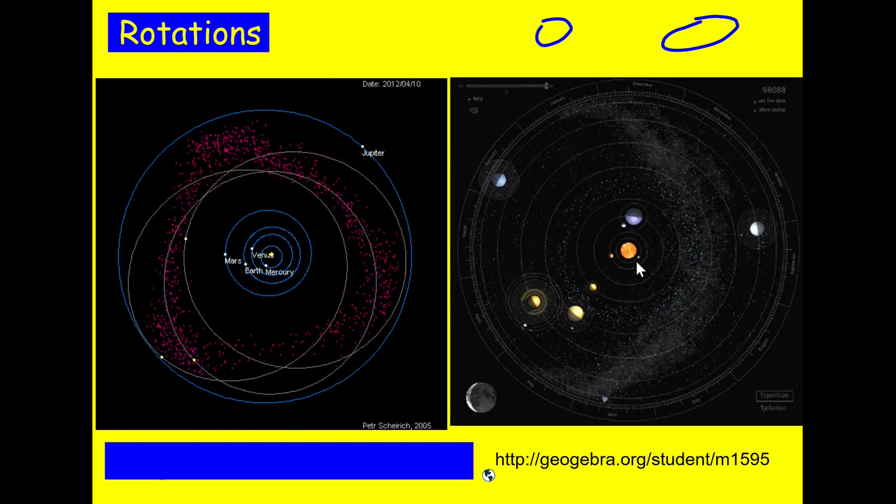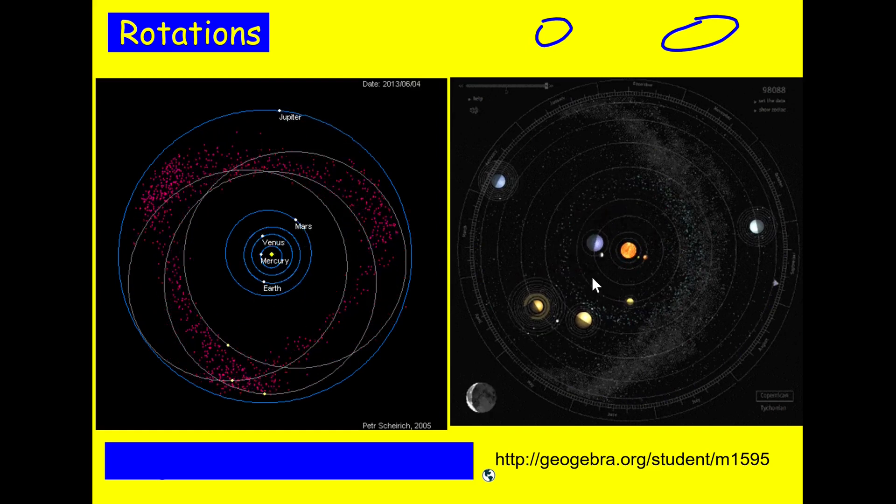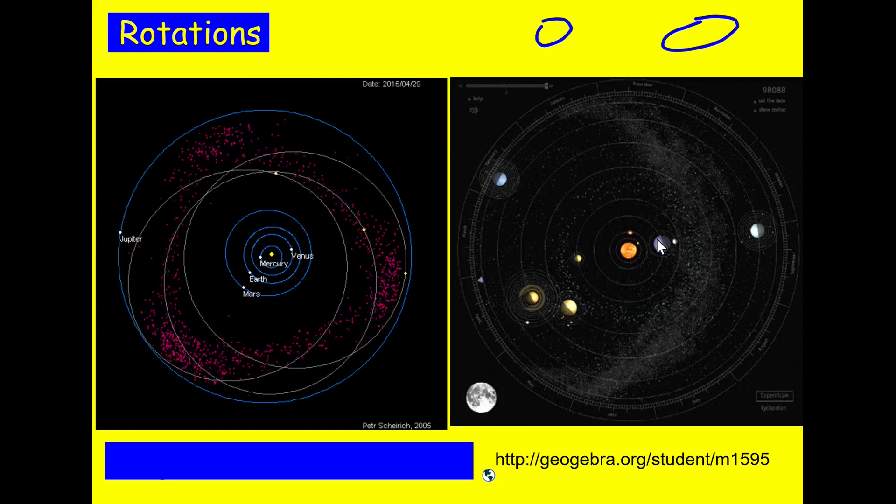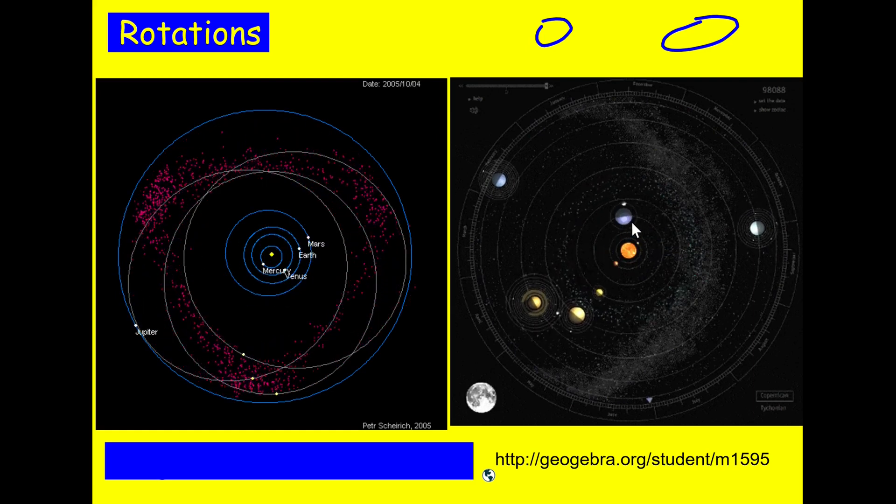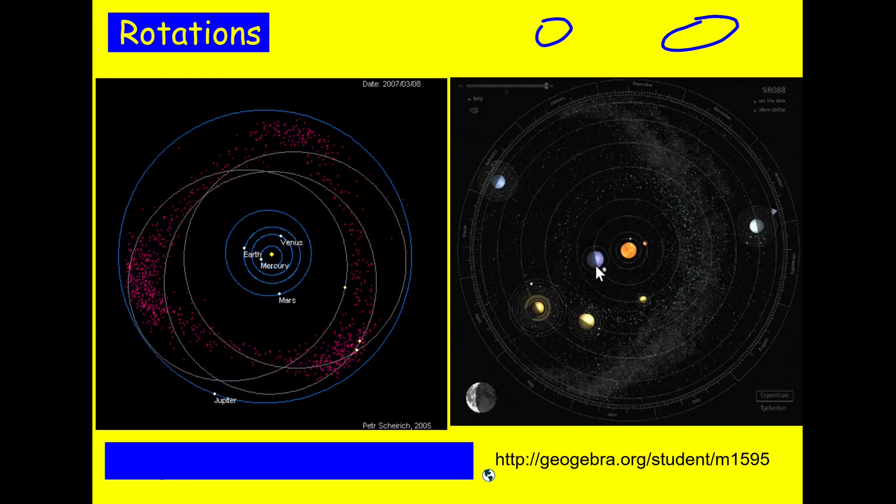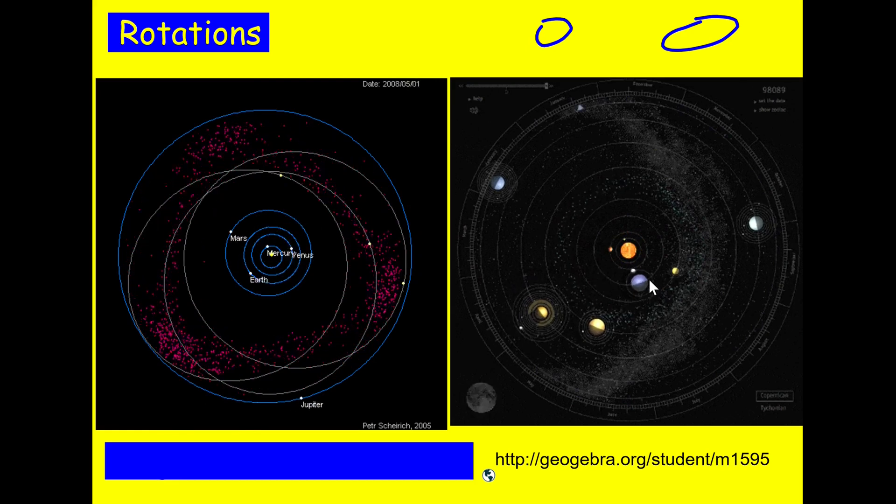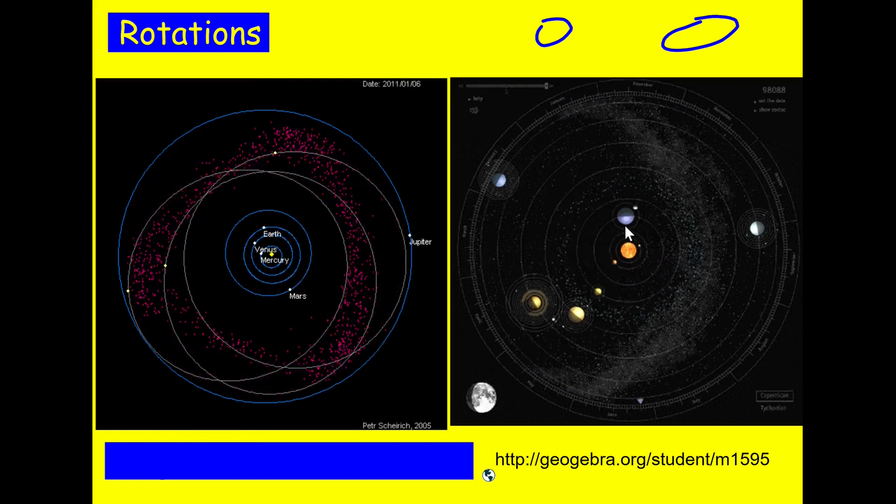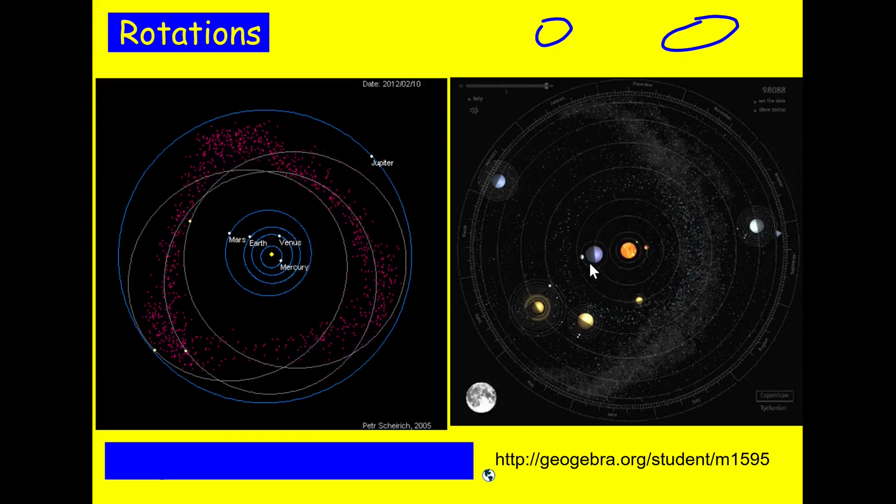This one on the right shows again the planets orbiting a bit slower now, and then it shows also the planets rotating around their own axis. Here that I'm pointing at is Earth. You can see, this is how we get day and night, when we're facing towards the Sun or away from the Sun. Towards the Sun is day and away from the Sun is night.